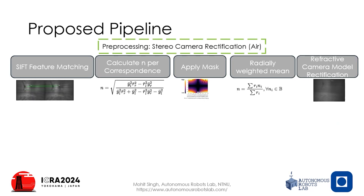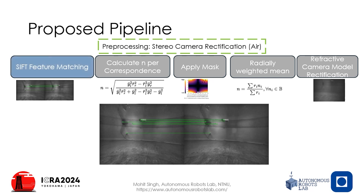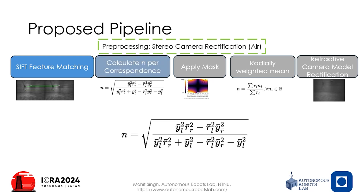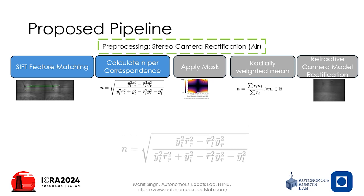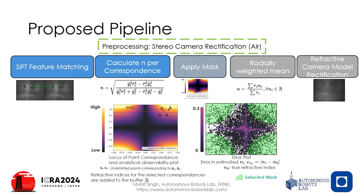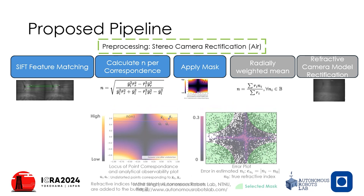In the proposed framework, we first perform stereo image rectification for the lens distortion and orientation offset in the cameras. This is followed by matching SIFT feature correspondences and calculating the refractive index of each feature. In practice, not all points provide equally accurate estimation, thus we use points in the mask motivated by the observability of the refractive index. We calculate the final estimation by taking a radially weighted mean.